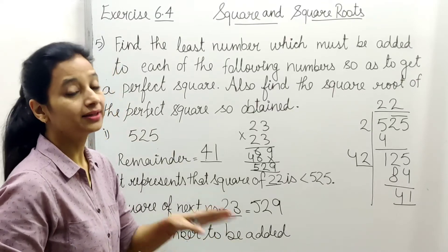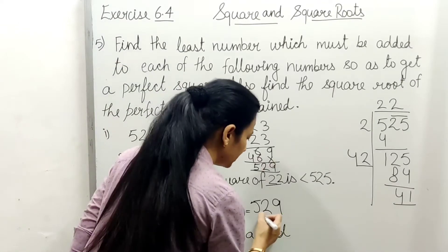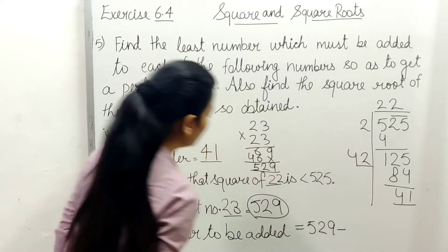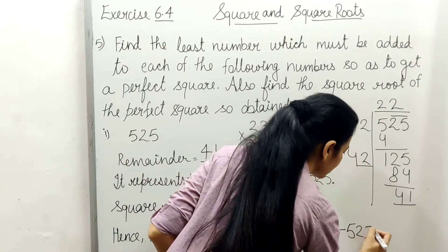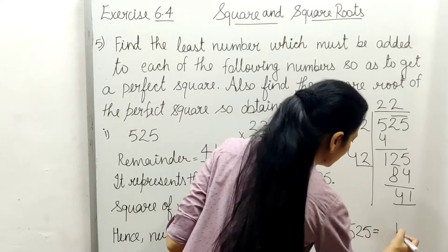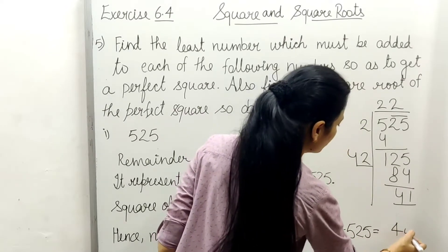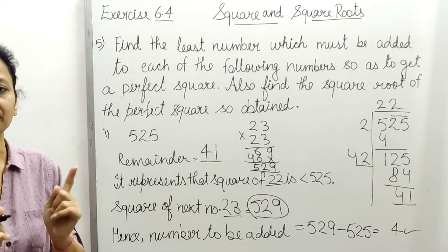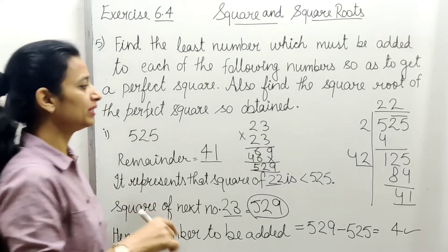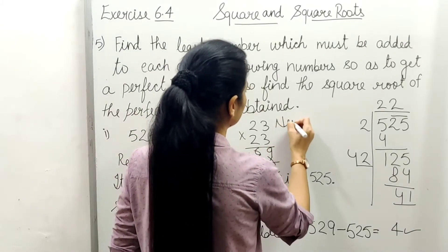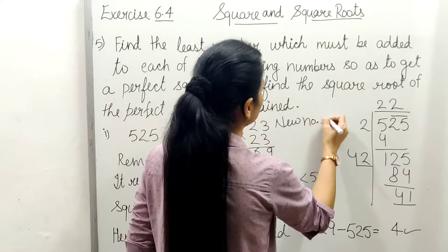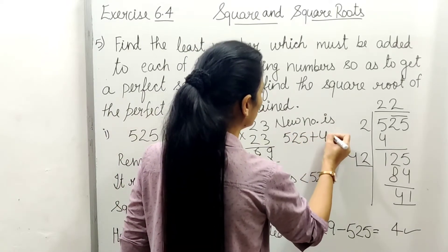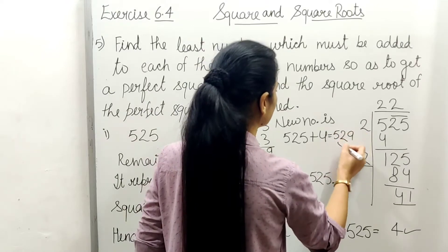Hence, number to be added: we'll find it by taking 529 minus the given number 525, which equals 4. And 4 is the least number which when added to this makes it a perfect square. So the new number will be 525+4=529.